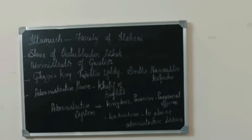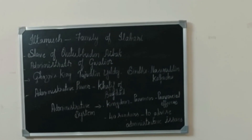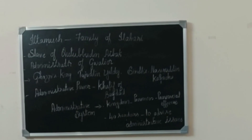Let us try to understand more about Iltutmish and his achievements. Iltutmish was a slave of Qutb-ud-din Aibak. He belonged to the family of Ilbari and was the administrator of Ghori. After the death of Qutb-ud-din Aibak, he became the ruler of the Slave Dynasty. The cousin kings Tajuddin Eldot and Nasruddin Kapata revolted against him, but as he was a brave and efficient ruler, he was successful in defeating them.